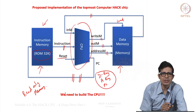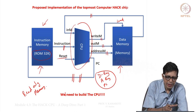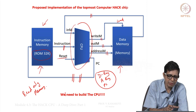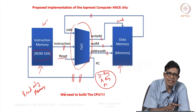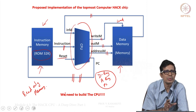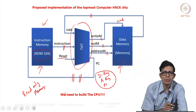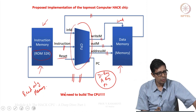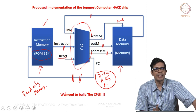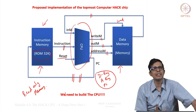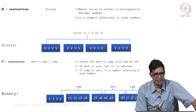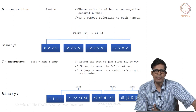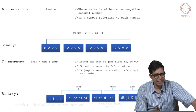Now what we will understand in this module is how a 16-bit instruction basically flows from the read-only memory to the CPU and how the CPU executes it. Very quickly to recap: what are those 16 bits in that instruction? The instructions are of two types: A instruction and C instruction.